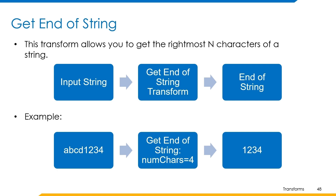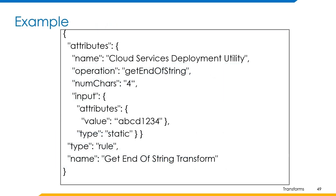Now let's understand how we can build a transform using this operation. The example can be built in this format where the name of the transform is get end of string transform and type is rule. It requires the name of the referenced rule to be cloud services deployment utility, and the operation must always be set to get end of string. We are providing input in the input attribute and number of characters as 4, so 1234 is returned as output — the last 4 characters from the specified string.